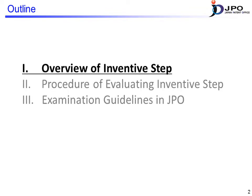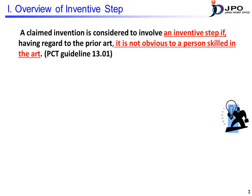First, let's look at the overview of Inventive Step. According to the PCT guidelines, if the claimed invention is not obvious to a person skilled in the art based on the details of the prior art, the invention is determined to involve an inventive step. There are three important keywords for determining inventive step: prior art, obviousness, and a person skilled in the art.